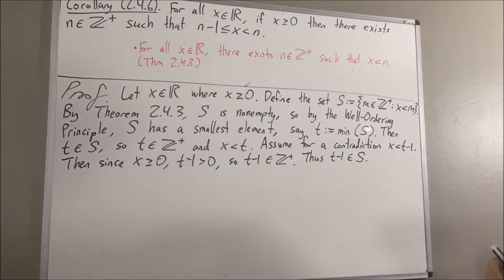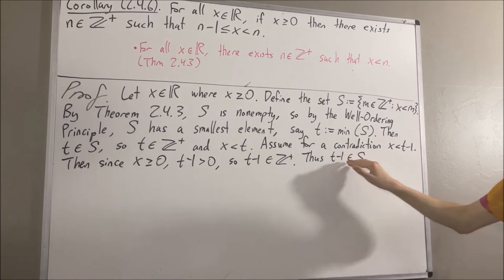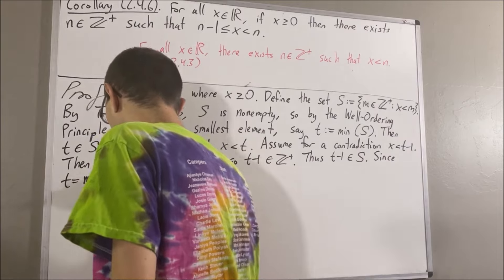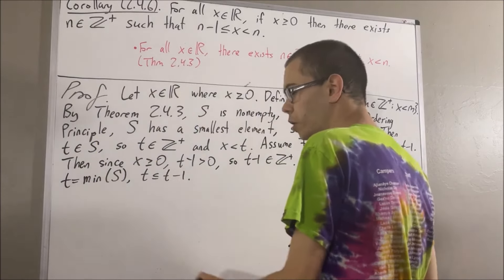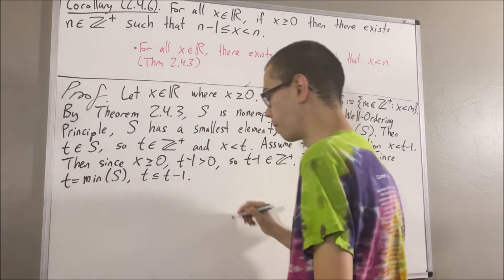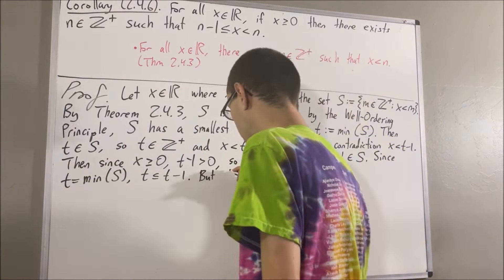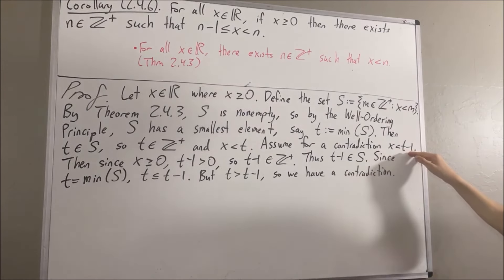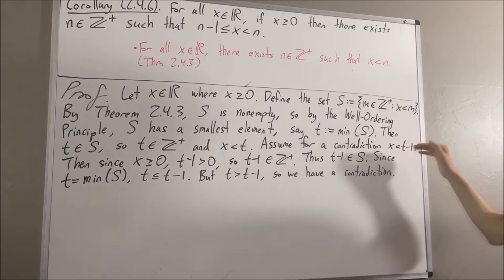However, since T is the smallest element of S, T is less than or equal to every element of S. So in particular, since T minus 1 is an element of S, we have that T is less than or equal to T minus 1. But we know that T is greater than T minus 1, so these two facts give us a contradiction. Our assumption that x is less than T minus 1 led to a contradiction, so we must instead have that x is greater than or equal to T minus 1.